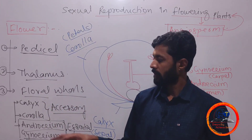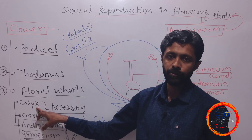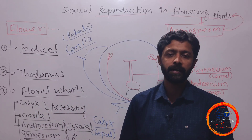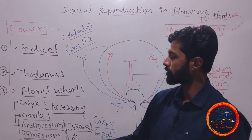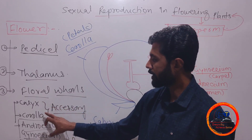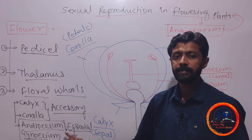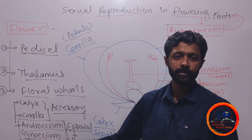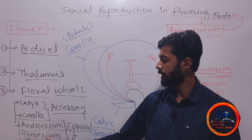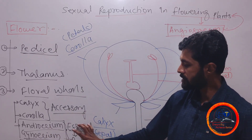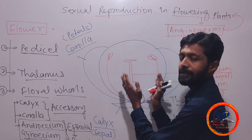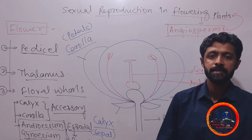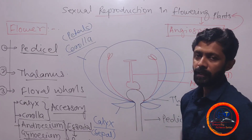Calyx and corolla serve for protection. The calyx is green in color and can perform photosynthesis. The corolla is colorful and meant for attracting the pollinating agent — the flower becomes attractive because of the size and color of the corolla. Androecium is the male reproductive organ producing male gametes, and gynoecium is the female reproductive organ producing female gametes, so they are placed on the inner side of the flower.